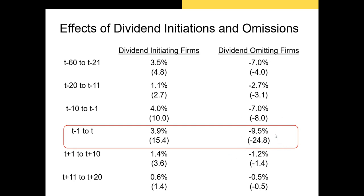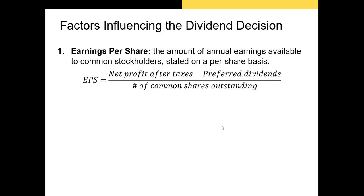This is why it's important, as a member of the board of directors, to determine that you can afford to continue to pay a dividend and not have to cut it in the future. The first factor determining whether a firm will pay a dividend is current earnings per share — net profit after taxes minus preferred dividends divided by the number of common shares outstanding. There's a positive relationship between earnings per share and dividends per share; more profitable firms are more likely to pay a dividend.